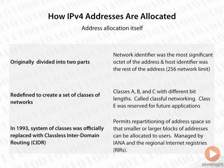That didn't scale, so it had to be redefined into the class spaces we are more familiar with today: class A, class B, and class C. Each of those classes has, by definition, a different bit length allocated to the network portion. We call this classful networking. We don't need a mask value to determine whether you are a class A, B, or C — we simply look at the first octet.